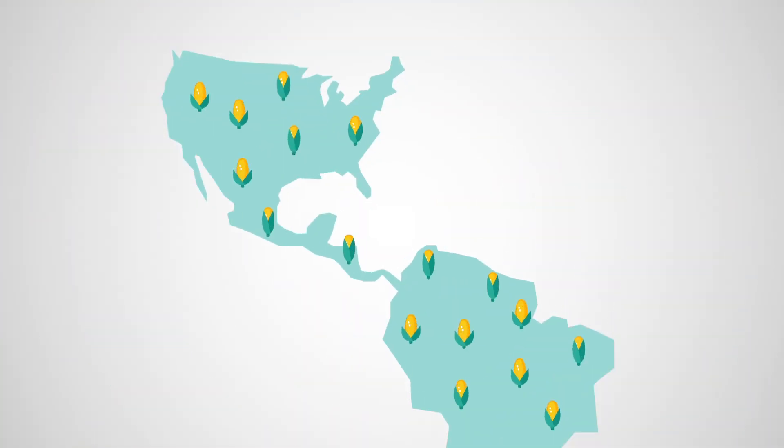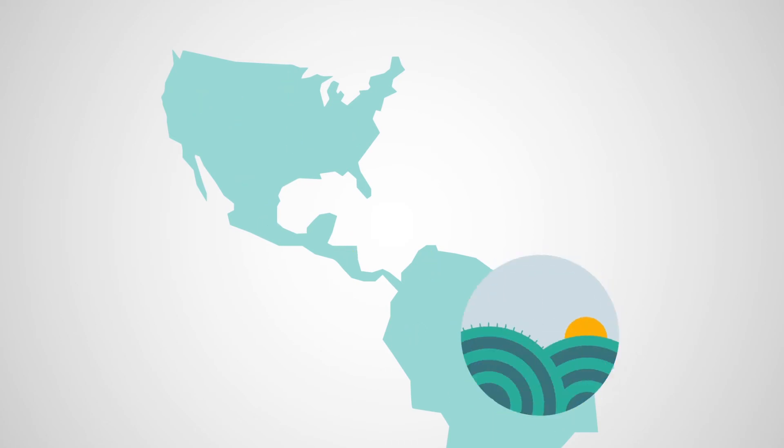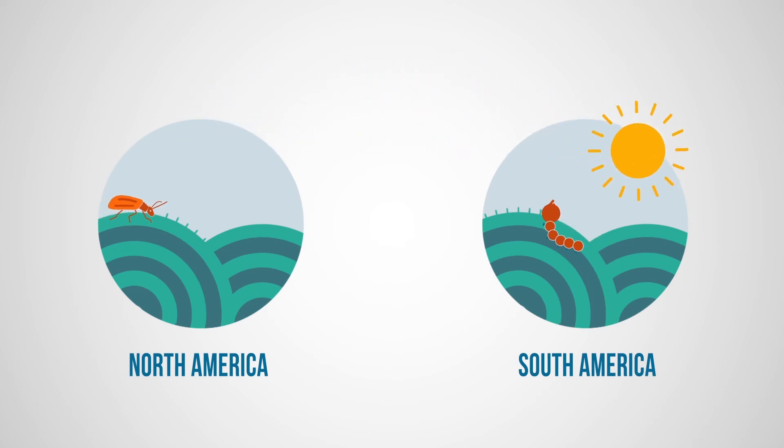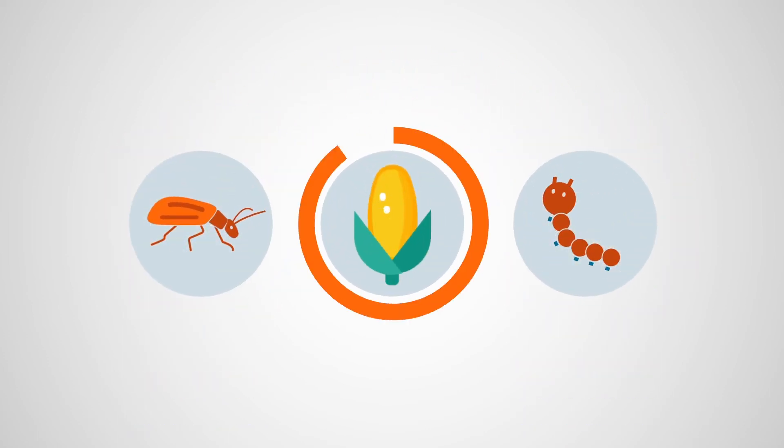Take the corn crop, for example. It's under attack in both South America and North America, but by very different insects. The same crop, but facing different threats that require different approaches.